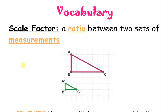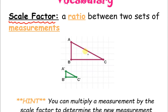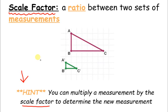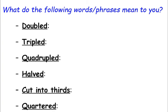Our definition is scale factor — a word you're going to see a lot in this lesson and going forward. Scale factor is a ratio between two sets of measurements — basically how big one thing is compared to another. As a hint: you can multiply a measurement by the scale factor to determine the new measurement. Once you find the scale factor, you can take a dimension and multiply it to find the new dimension.